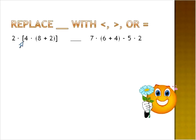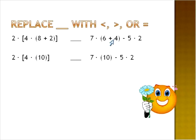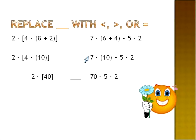Let's look at this one — it has grouping symbols, so we're going to start on the inside. Eight plus two on the left, and six plus four on the right — both ended up as ten. Now going inside the grouping symbols again: four times ten gives forty on the left, and ten times seven gives seventy on the right. Then two times four is eighty.